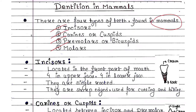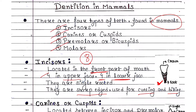First one is incisors. These teeth are located in the front part of the mouth. Total eight incisors are there in humans — four are found in the upper jaw and four are found in the lower jaw. They are single rooted, with only one root. They are sharp edged, used for cutting and biting food.